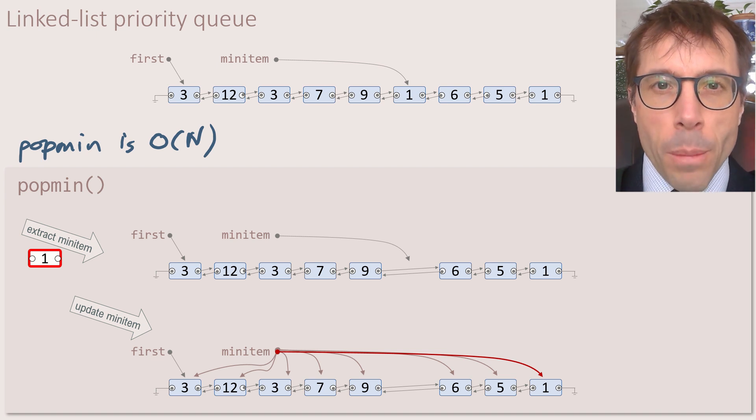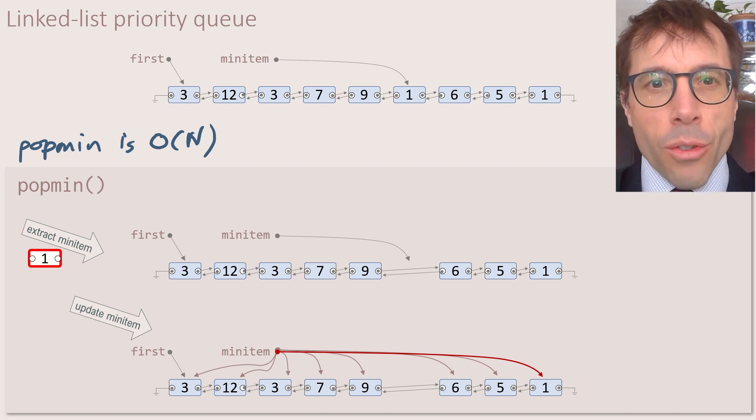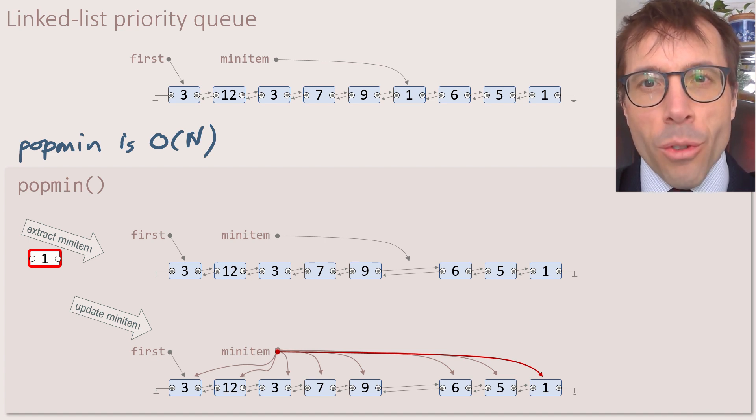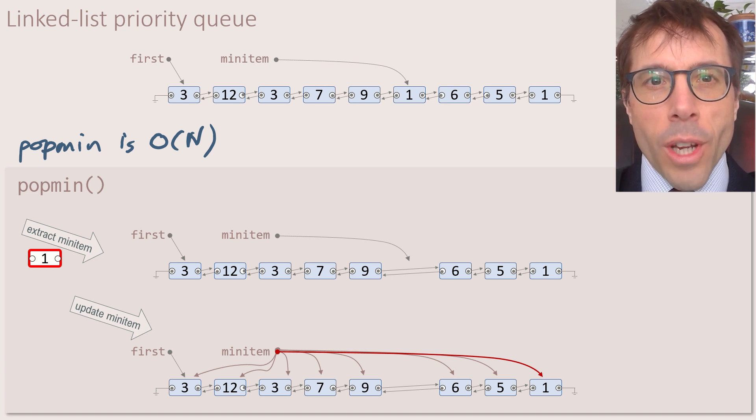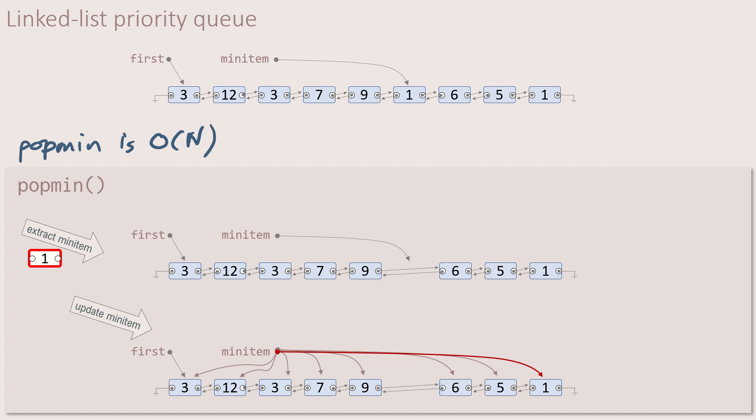The problem with this implementation is that it never learns anything. Every time we call pop min, we have to scan through the entire list to find the next smallest item. But then we completely forget most of those comparisons. So next time round, we just have to scan everything again. That's really what the binary heap and the binomial heap are giving us. They're a way that we can manifest inside the data structure all the comparisons that we made last time round, so that the next time we call pop min, most of the work has already been done.